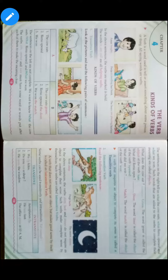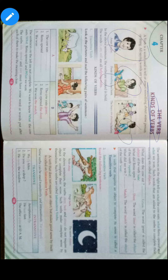Jai Ma Saraswati, students. Now we are talking just about verb. Verb is a doing and saying word. Verb is a doing and saying word. Now, the kinds of verb — how many kinds are there? You can see these parts on screen — these are the verbs, the doing and saying words.